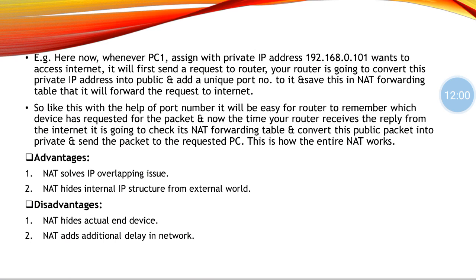Some advantages and disadvantages of NAT: NAT solves overlapping issues using the NAT mapping table, and it hides the internal IP structure from the external world — the private IP of a PC is hidden from the router, which only sees the default gateway. A disadvantage is that by hiding the actual end device's IP, the router must maintain and process the NAT mapping table, which increases delay. This concludes part one of the first chapter — part two will be uploaded soon, so keep posting your doubts.